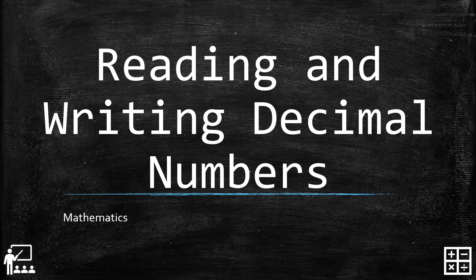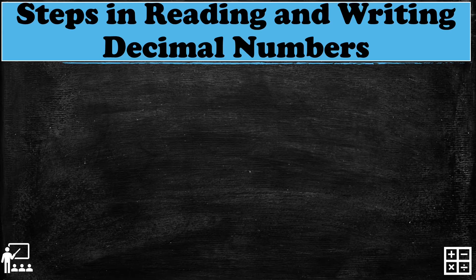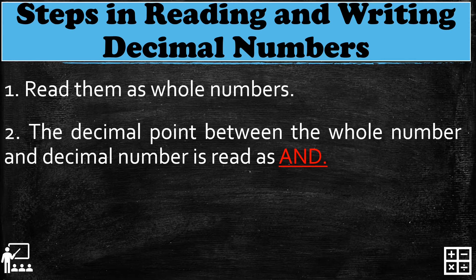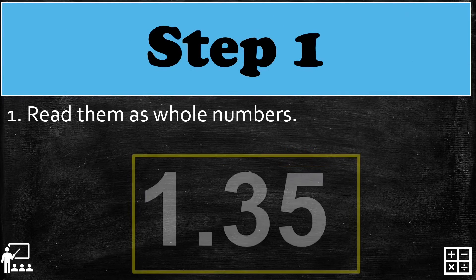This video lesson is about reading and writing decimal numbers. We're going to focus on the tenths and hundredths place value. Here are the steps: first, read the whole number part; second, the decimal point between the whole number and decimal part is read as 'and'; and last, state the place value name of the last decimal digit.